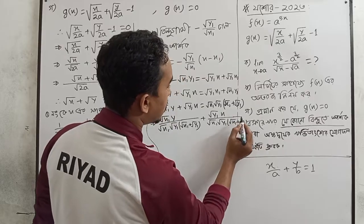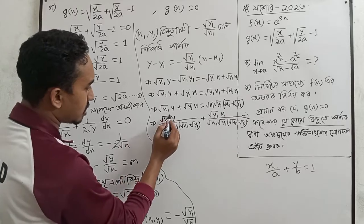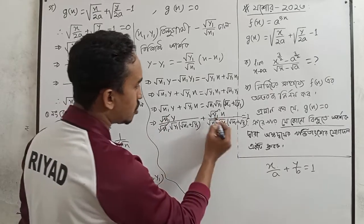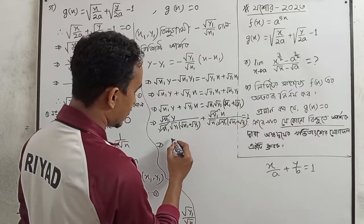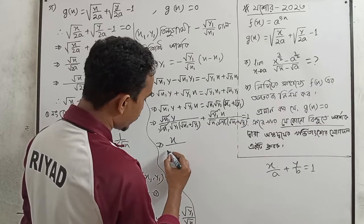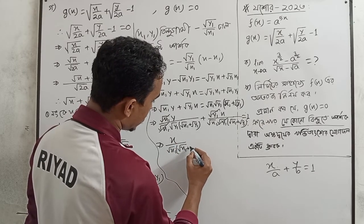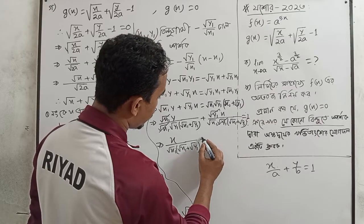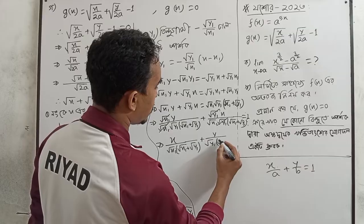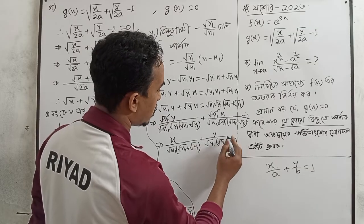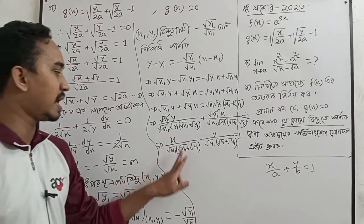Dividing through: x divided by root x1 plus y divided by root y1 equals 1. Since root x1 plus root y1 equals root 2a, we substitute. So x by root x1 plus y by root y1 equals root x1 plus root y1, which equals root 2a. Therefore x divided by root x1 into root 2a plus y divided by root y1 into root 2a equals 1.